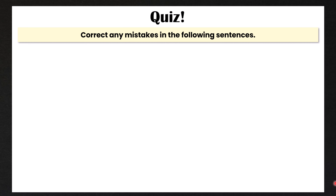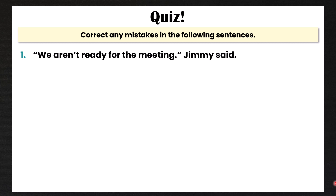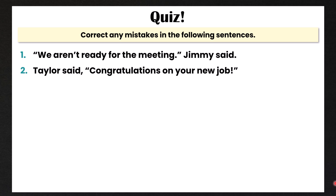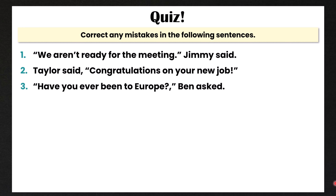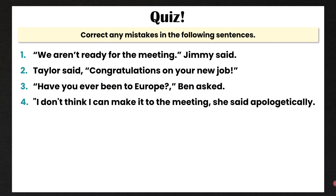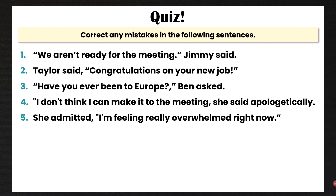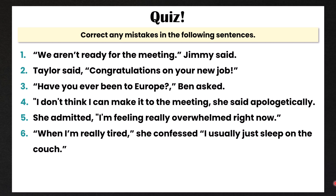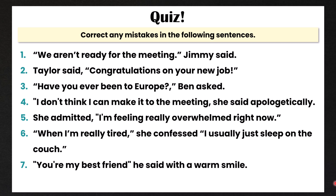Okay, now it's time for a quiz. You have to correct any mistakes in the following sentences. Number one: 'We aren't ready for the meeting,' Jimmy said. Number two: Taylor said, 'Congratulations on your new job.' Number three: 'Have you ever been to Europe?' Ben asked. Number four: 'I don't think I can make it to the meeting,' she said apologetically. Number five: She admitted, 'I'm feeling really overwhelmed right now.' Number six: 'When I'm really tired,' she confessed, 'I usually just sleep on the couch.' Number seven: 'You're my best friend,' he said with a warm smile.